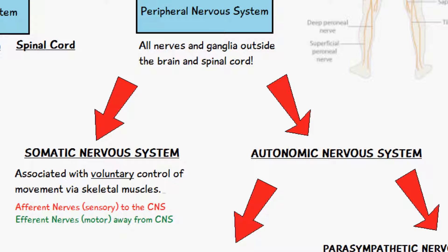The somatic nervous system is responsible for voluntary control of movement through the skeletal muscle. So anytime you want to move your arm consciously, it's done by the somatic nervous system. For this to take place, we have afferent nerves, which are sensory, and efferent nerves, which are motor.